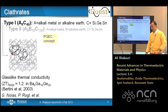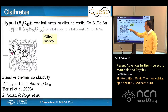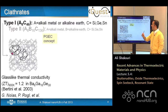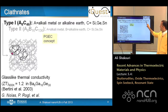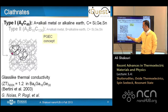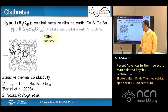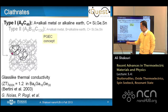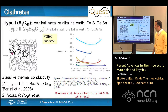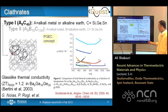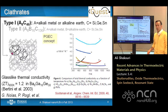Clathrates are another example of a complex crystal structure. Type 1, shown here, is an alkali metal or alkaline earth with silicon, germanium, or tin. These have very low, glass-like thermal conductivities. ZT as high as 1.2 at 900 Kelvin for barium gallium germanium has been shown by Bertinini et al., with lots of work also by George Nolas and Peter Rogel's group. Some clathrates show notably low thermal conductivity.